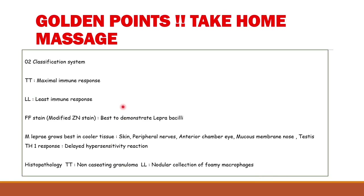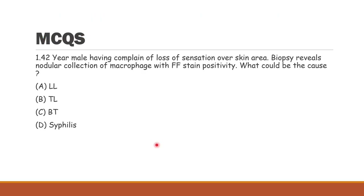Key golden points: leprosy has two main classification types — lepromatous and tuberculoid. In tuberculoid, immune response is maximum; in lepromatous, immune response is low. Fite-Faraco stain demonstrates the lepra bacilli. Leprosy is a type 4 delayed hypersensitivity reaction. In tuberculoid leprosy, granuloma formation is seen; in lepromatous leprosy, nodular collection of macrophages is seen in the dermis.